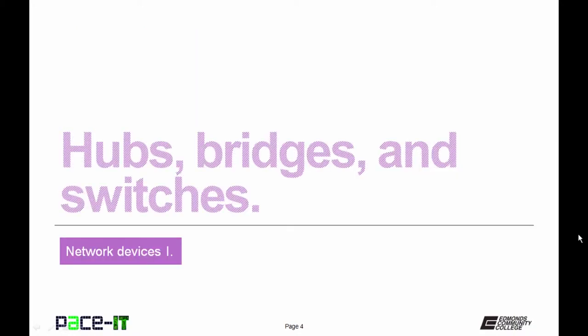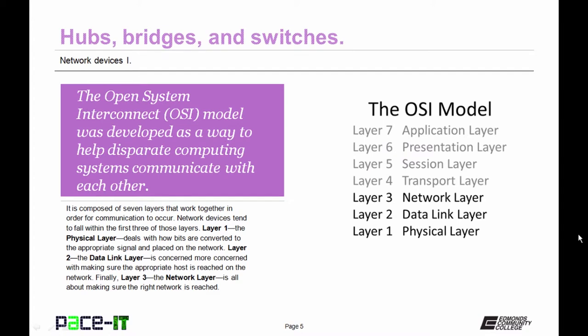I'll begin with hubs, bridges, and switches. Before we begin with the actual devices, let's talk about the OSI model first. The Open System Interconnect model was developed as a way to help disparate computing systems, or networks, communicate with each other. It is composed of seven layers that work together in order for communication to occur. Network devices tend to fall within the first three of those layers.